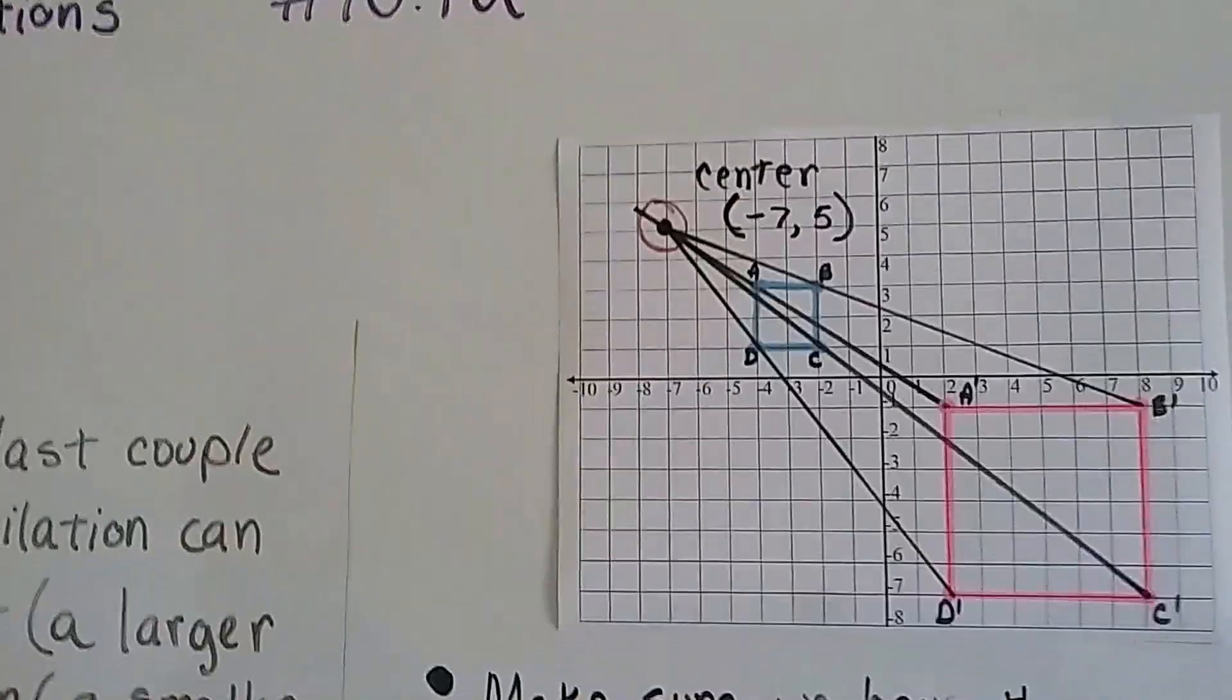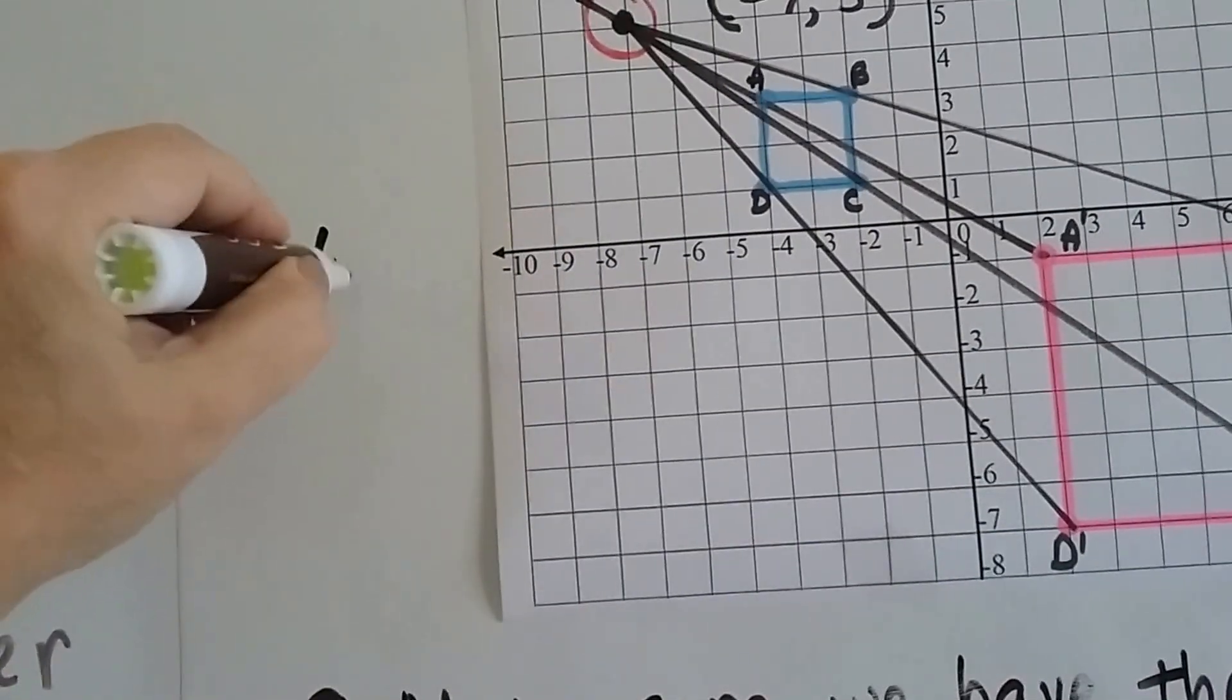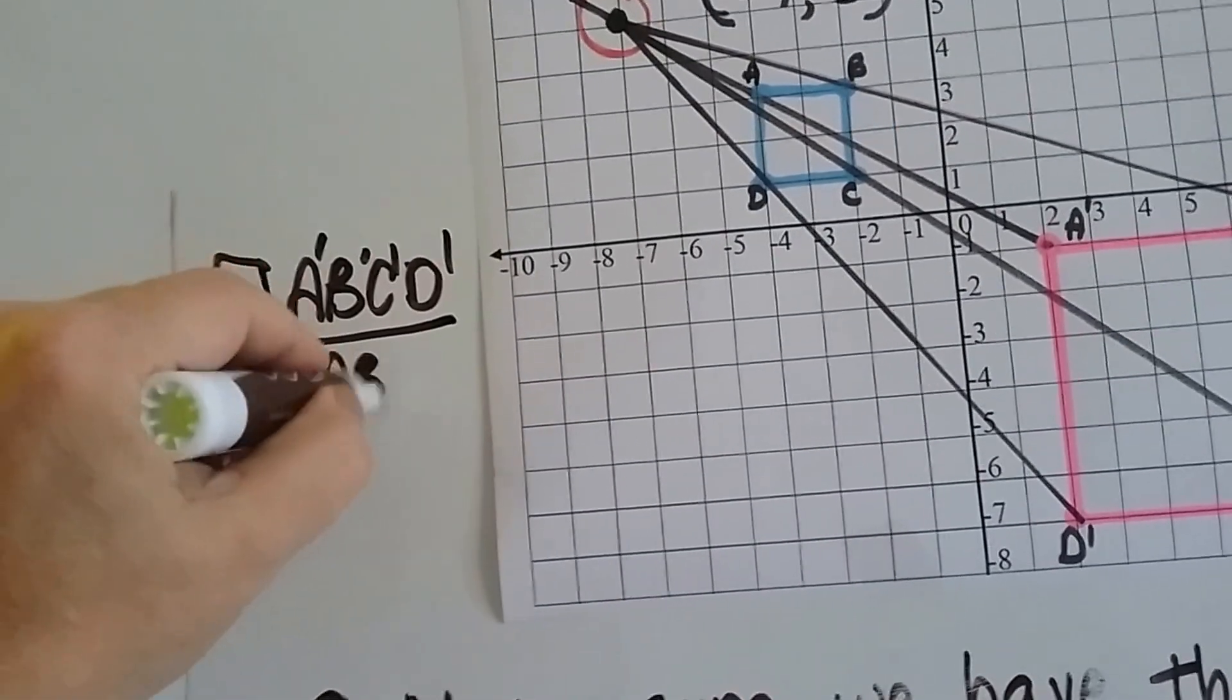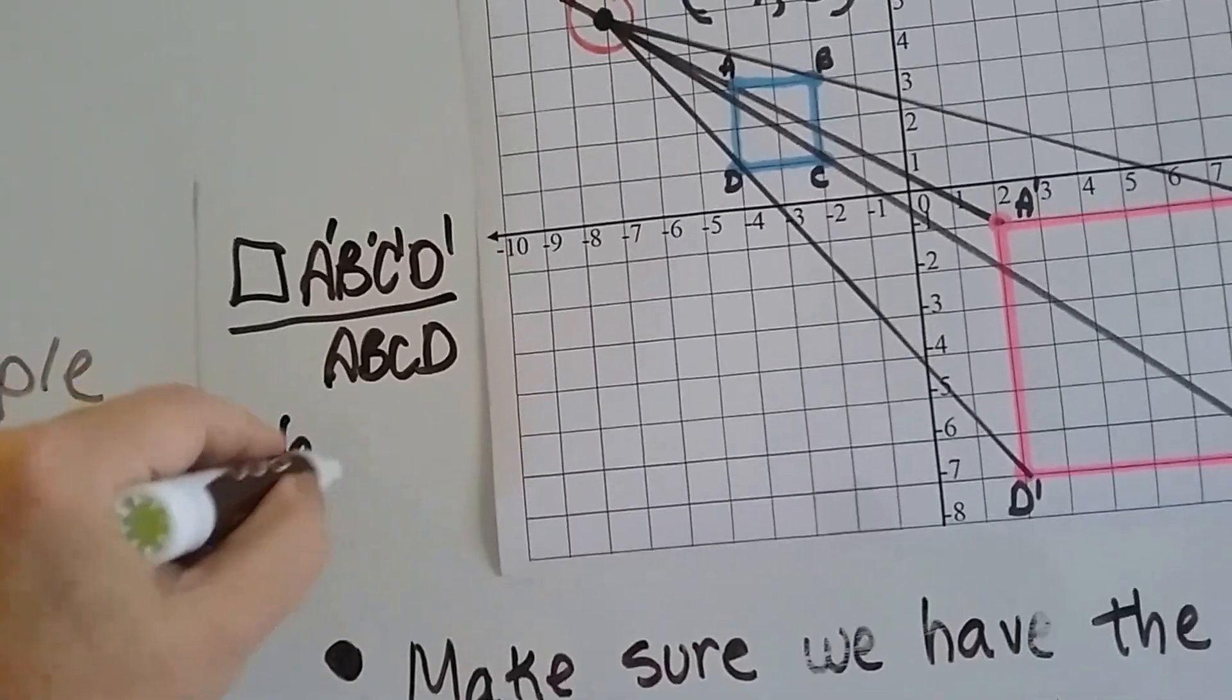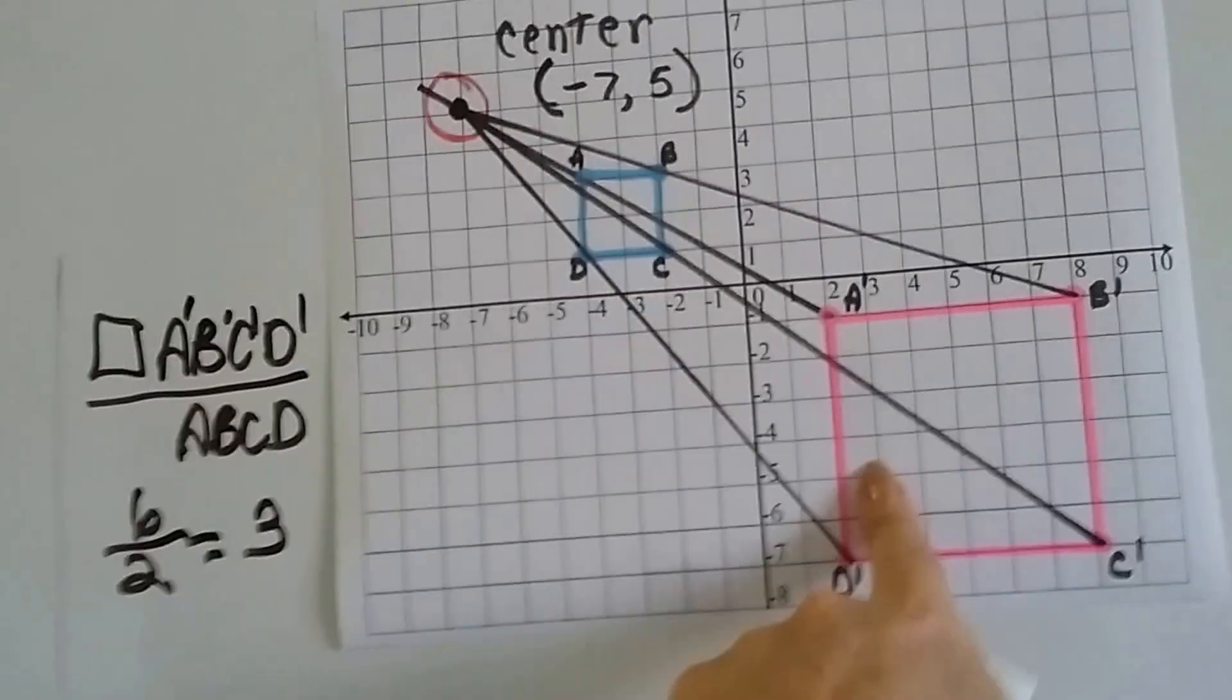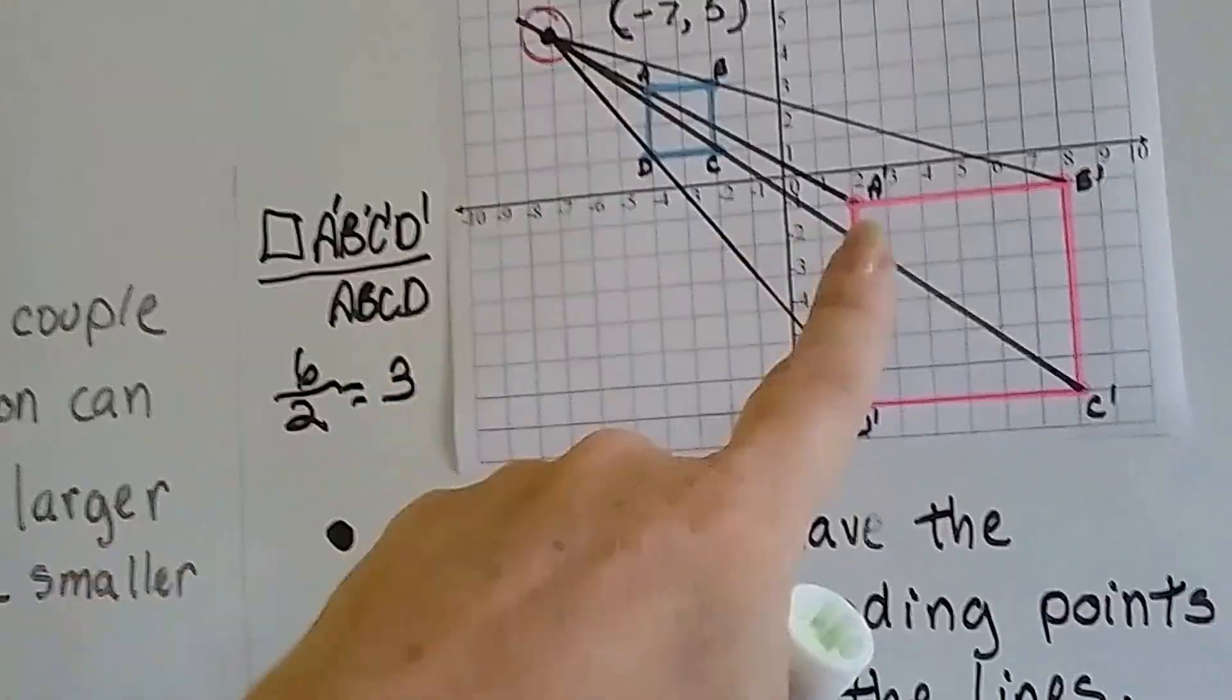If we were to do this as a proportion, we'd say that square A'B'C'D' would be over the square of ABCD. Because the copy is six units across and the original is two units across, six over two equals three. We know this one's three times bigger. That's the proportion, the ratio. It's six to two, or three.